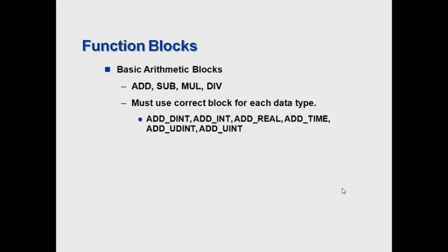It used to be that you had to use the correct block for each data type in older software, such as the ADD integer or ADD real. But in the newer Unity software, you can simply use the ADD block and it will automatically determine which data type it's adding. Of course, you can only use the same data types. For example, if you're adding a real, you must have a real as both inputs or multiple inputs and the output must be a real data type as well.